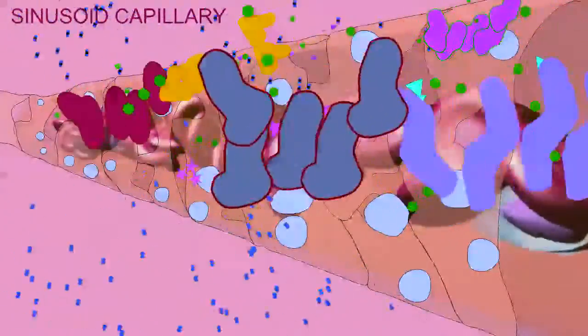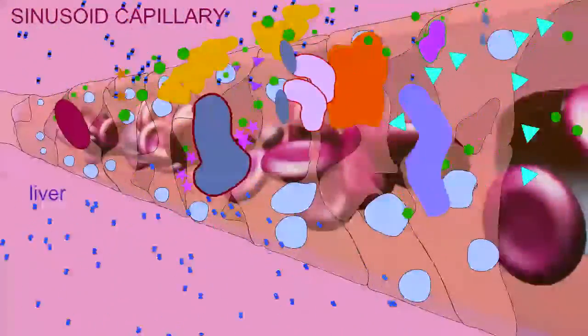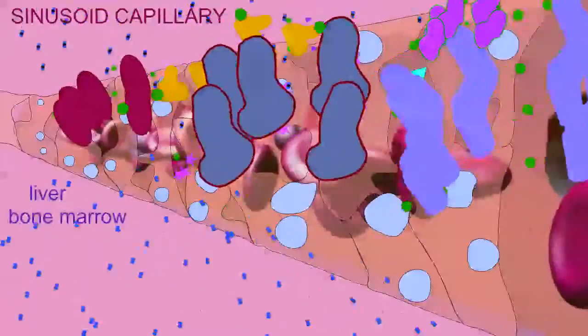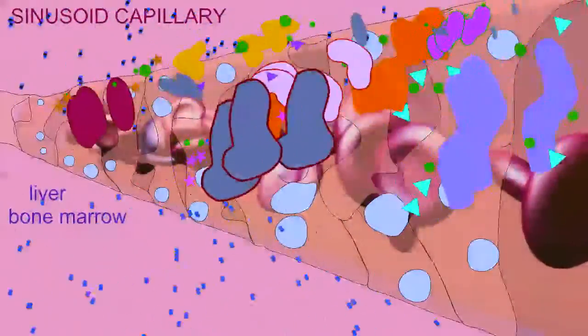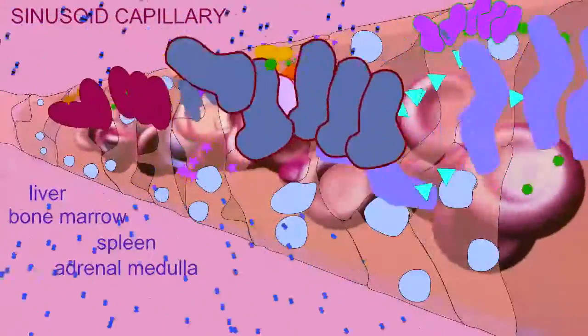Sinusoid capillaries are found in the liver, where diverse proteins are produced and enter the blood, in the bone marrow, where blood cells are produced and enter the blood, and a few other tissues, such as the spleen and adrenal medulla.